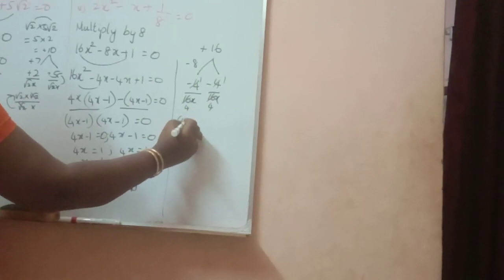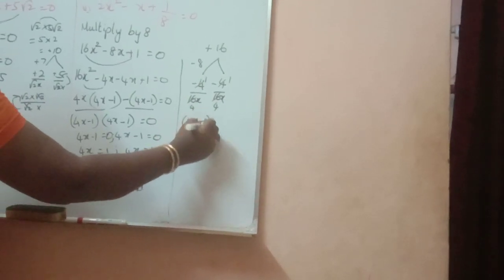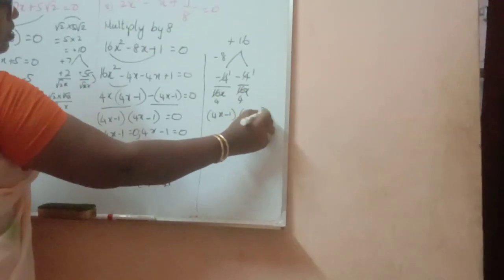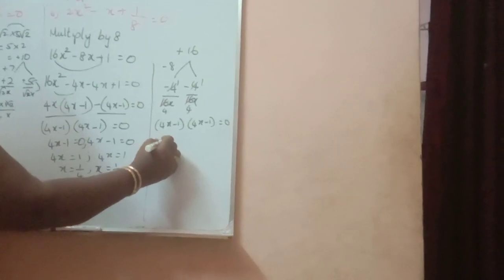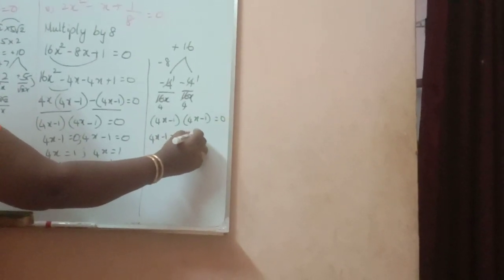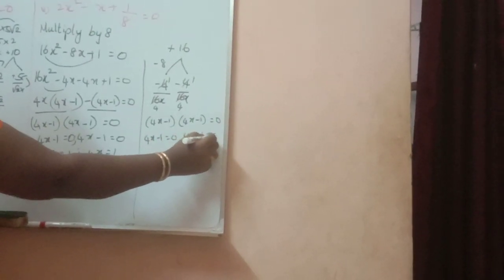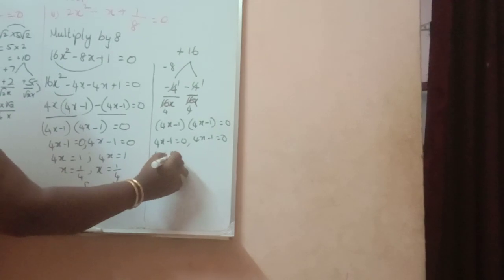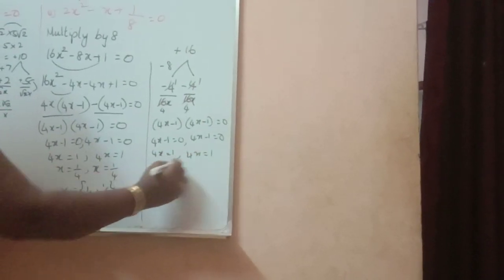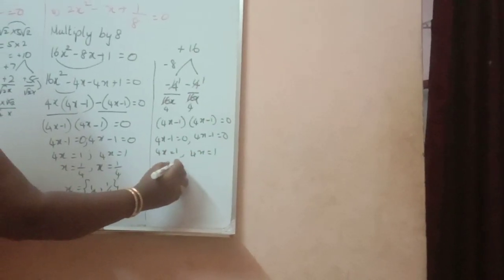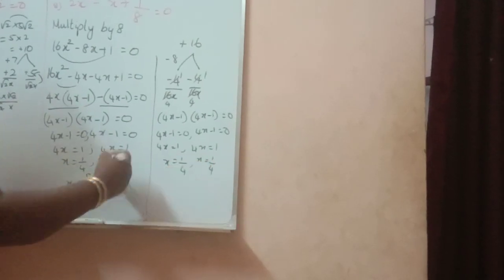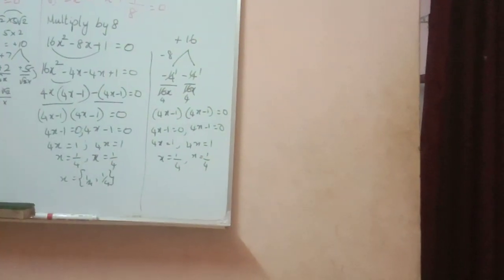So, the factors are 4x minus 1, 4x minus 1 equal to 0. First bracket equal to 0, second bracket equal to 0. 4x equal to 1, x equal to 1 by 4. So, the same answer you will get.